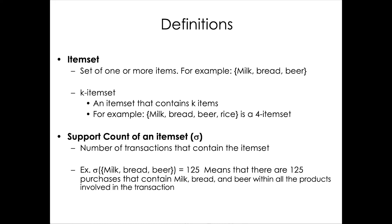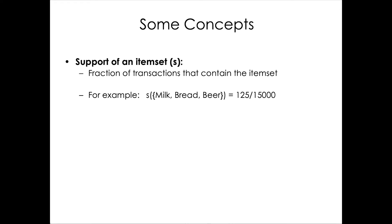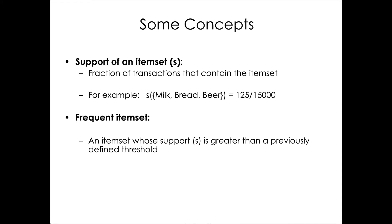The support of an item set is the support count divided by the total number of transactions — it's the relative frequency, or the proportion of transactions that contain milk, bread, and beer. We say an item set is frequent if its support is greater than a threshold, for example 15%. Every item set with support greater than or equal to 15% is considered frequent.